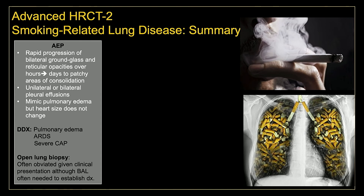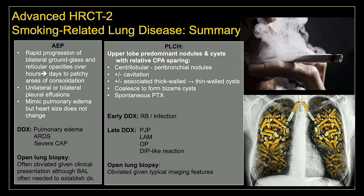To summarize, we discussed five smoking-related lung diseases. Acute eosinophilic pneumonia presents in acutely ill patients, rapidly progressing over hours to days from ground-glass opacities to frank consolidation. It can look like pulmonary edema; bilateral or unilateral pleural effusions are present. Lavage is the key to making this diagnosis — think about it in patients not getting better on antibiotics who progress to respiratory failure. Pulmonary Langerhans cell histiocytosis has an upper- and mid-lobe predominant pattern of nodules and cysts with relative sparing of the costophrenic angles and extreme apices. Nodules may progress to cavitation, initially thick-walled, then thin-walled, then bizarre, and may give rise to spontaneous pneumothorax.